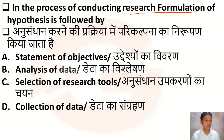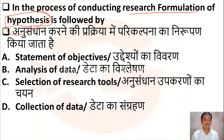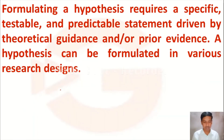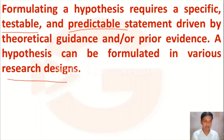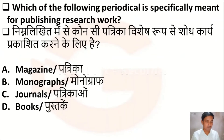The next question is: in the process of conducting research, formulation of hypothesis is followed by — Option A: statement of objectives, Option B: analysis of data, Option C: selection of research tools, Option D: collection of data. Formulation of hypothesis is followed by selection of research tools, so Option C is the correct answer. Formulating a hypothesis requires a specific, testable, and predictable statement driven by theoretical guidance or prior evidence.